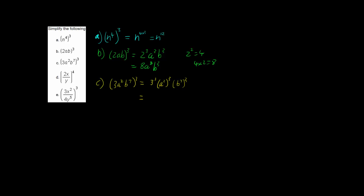3 cubed: 3 squared is 9, and 9 times 3 is 27. So we have 27a to the — now using the fourth index law, multiply the powers — 2 times 3, and b to the 7 times 3. That gives us 27a to the power of 6, b to the power of 21.